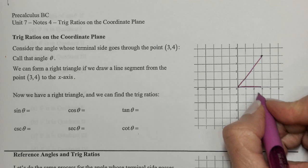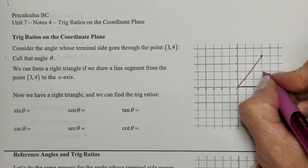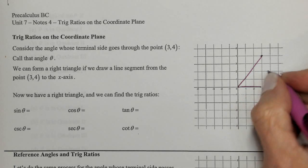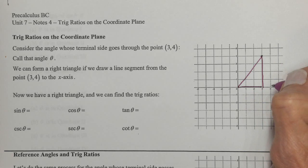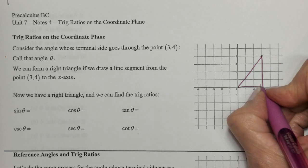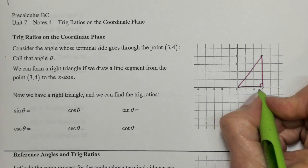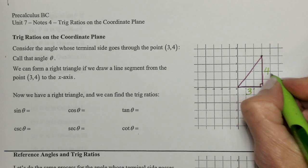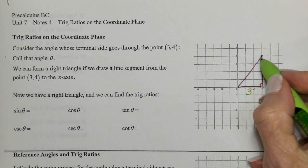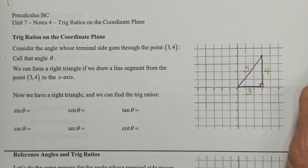I'm going to form a right triangle using this as the hypotenuse, and I'm going to always draw a perpendicular line to the x-axis — always to the x-axis, never to the y-axis. Your right angle will always fall right on your x-axis. I know that this side is of length 3 and this side is of length 4. This is a 3-4-5 right triangle, so that hypotenuse has length 5.